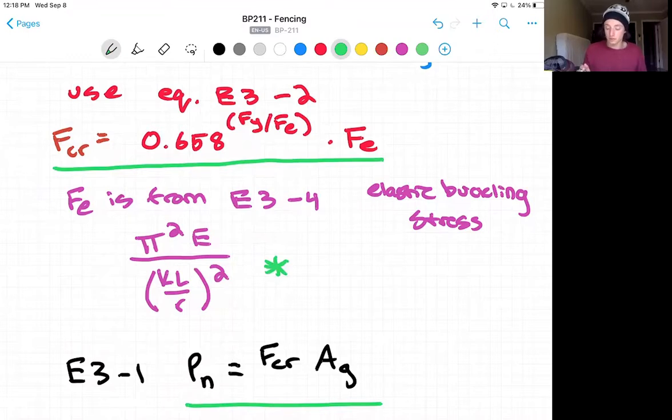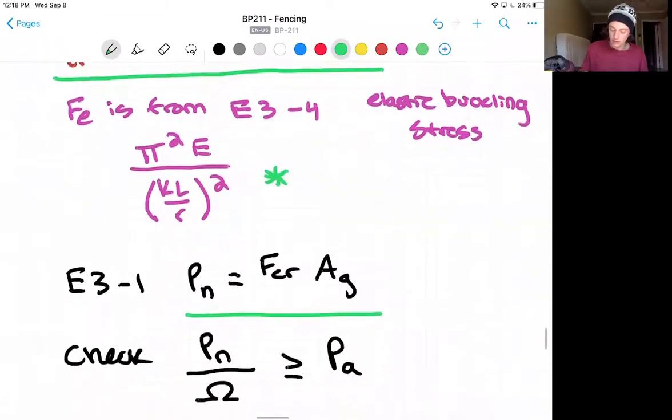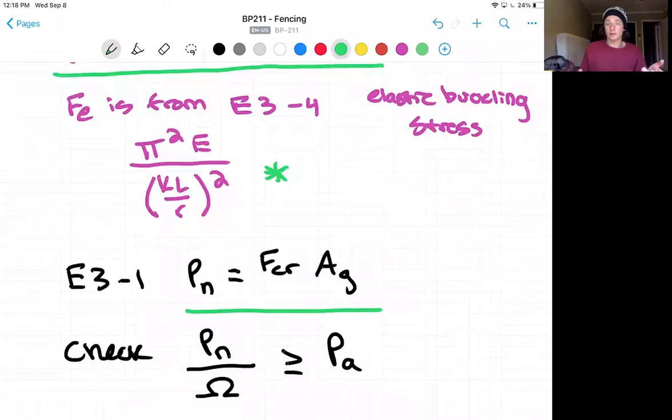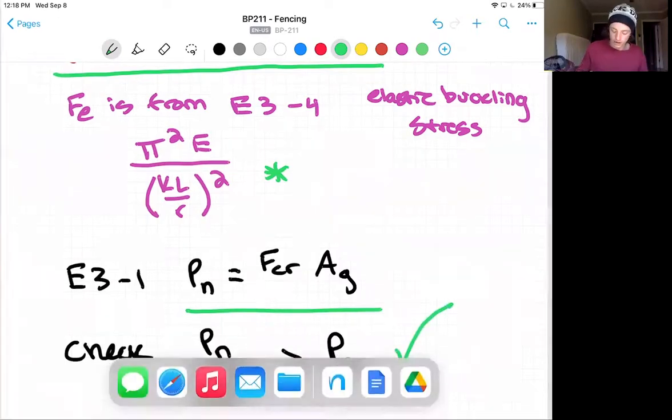And we can find that our nominal capacity is our critical force times our gross area of the section. And we have the values for both of these numbers. So we can go ahead and check that our nominal divided by our factor of safety is greater than or equal to our demand force. All right.